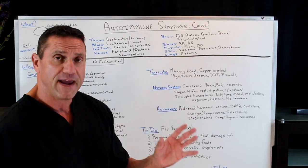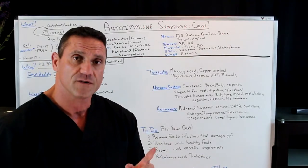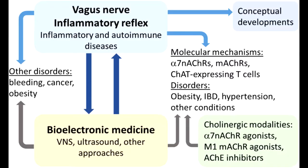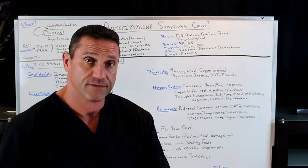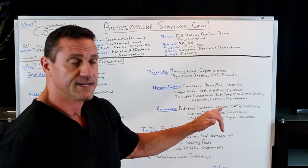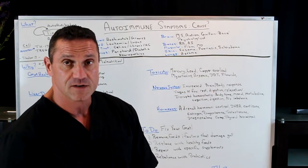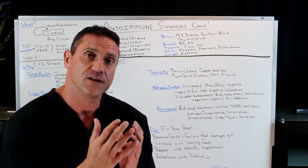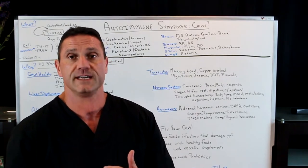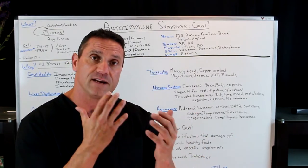Nervous system — you're going to have an increased brain and body response. Things are going to be more hypersensitive. The vagus nerve is the longest nerve of the body. 80% of the vagus nerve is your parasympathetic — rest, digest, and repair. When you have an autoimmune dysregulation, that's going to throw it off kilter. You're going to have a disrupted homeostasis — body temperature going hot to cold, moodiness, metabolism either too fast or too slow. Cognition, digestion, neurotransmitter imbalance. If you're not breaking down your food, then the proteins which build your neurotransmitters — dopamine, serotonin, GABA — yes, you're going to have a brain and body dysregulation.